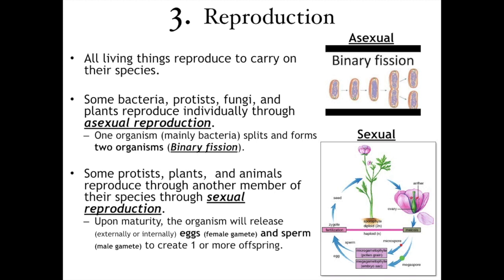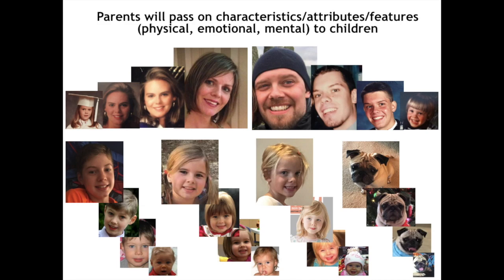The second type of reproduction is sexual, and that's where you have a male and a female — an egg and a sperm. In the case of a flower, the pollen is the male gamete, like the sperm, and the ovules are the little eggs, which are the female. So we have asexual reproduction, where you don't need a mate, and sexual reproduction, which involves a male and female. There is no male and female in bacteria. Binary fission is when one organism splits in half evenly, making two of the same exact organism. Reproduction passes on different traits, characteristics, and features.